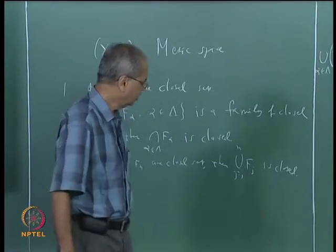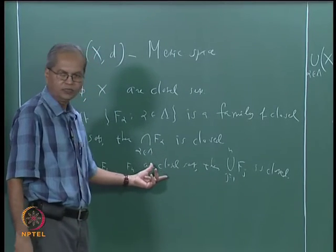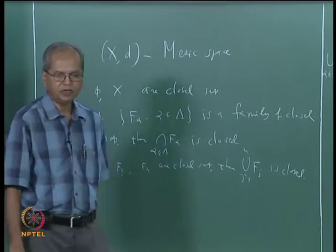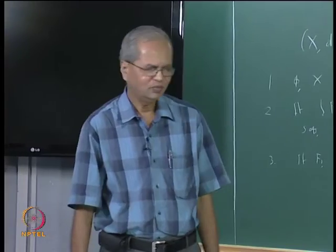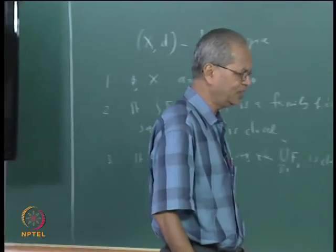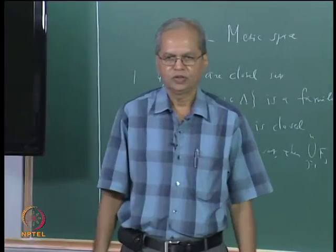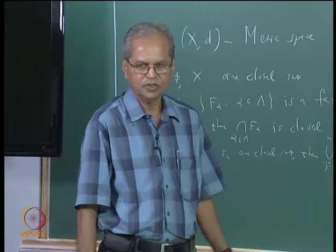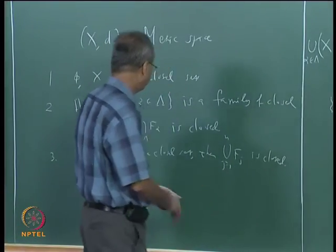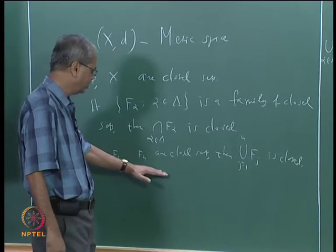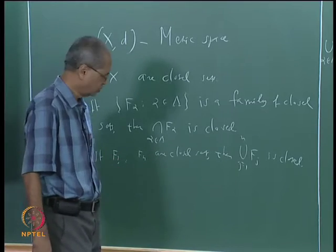As we have seen in the case of open sets, we cannot replace the finite family by an arbitrary one. You cannot say that the union over an arbitrary family of closed sets is closed. Because if that were true, then any arbitrary set — being a union of singleton sets — would be closed, which is not the case. You can also easily find counterexamples to show that you cannot dispense with the assumption of finiteness.